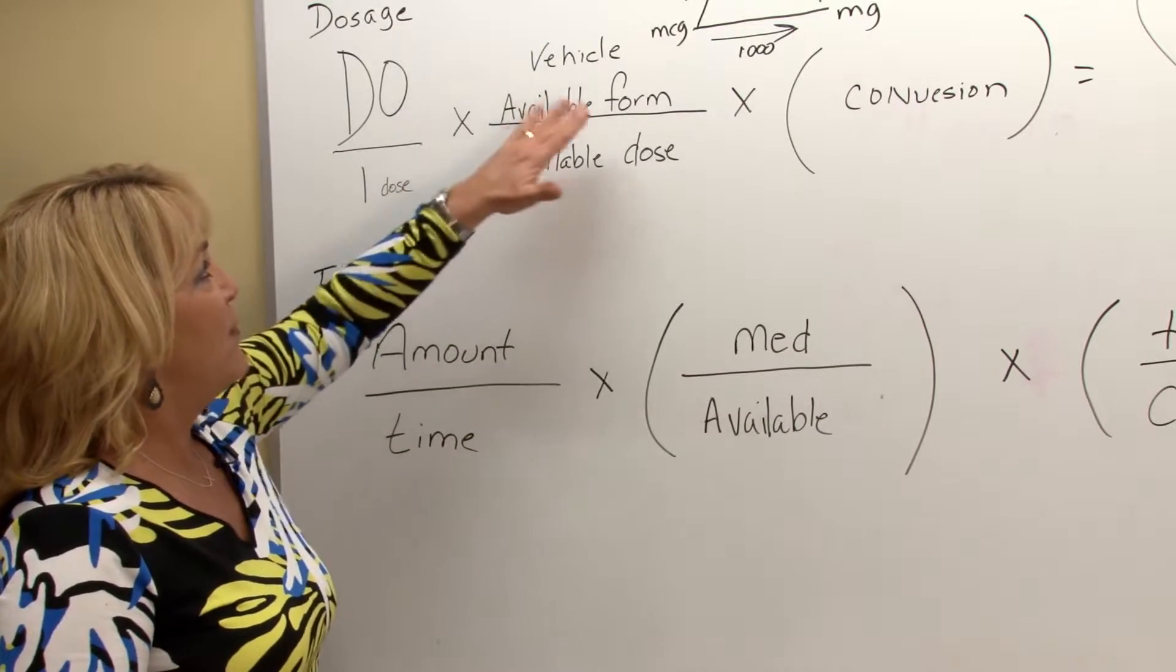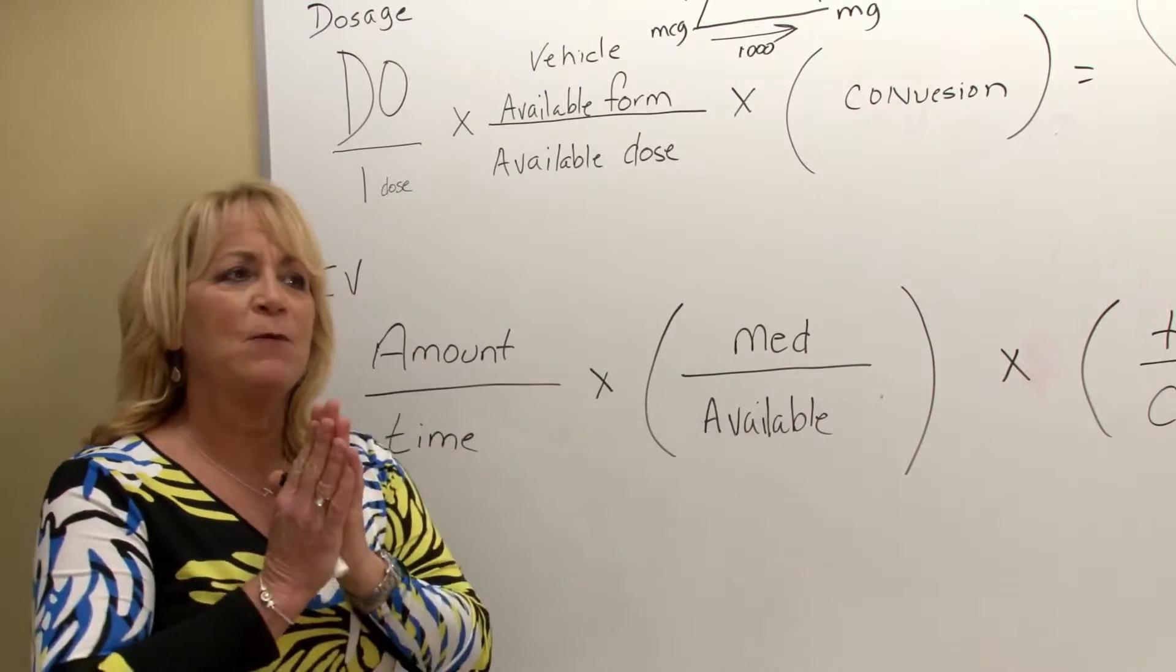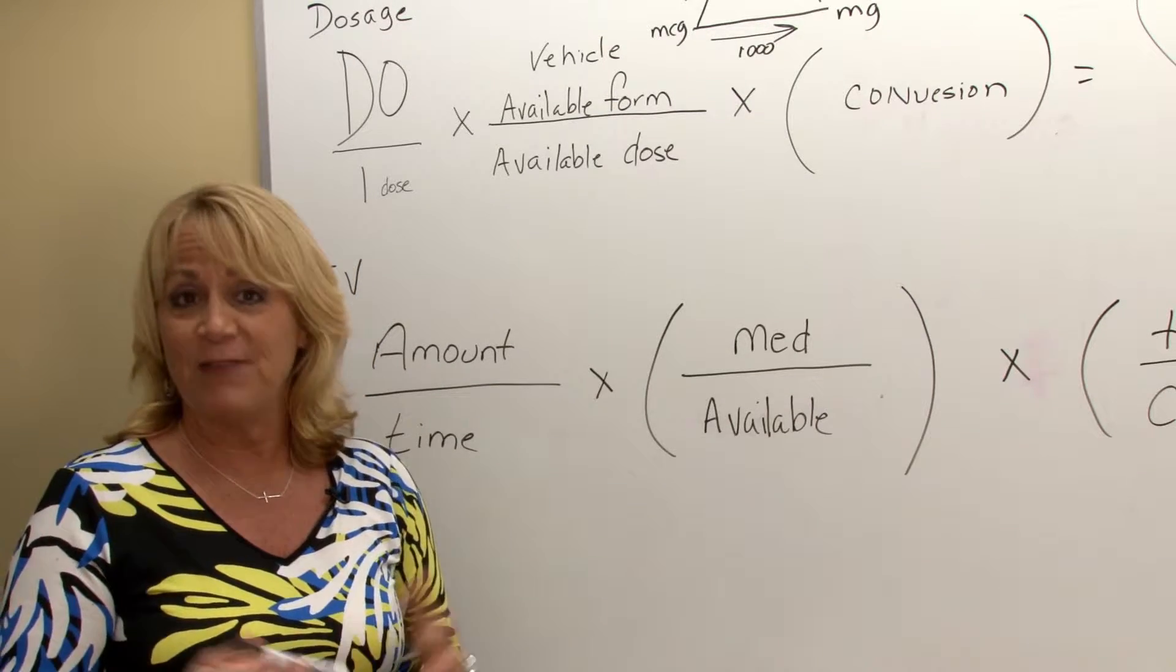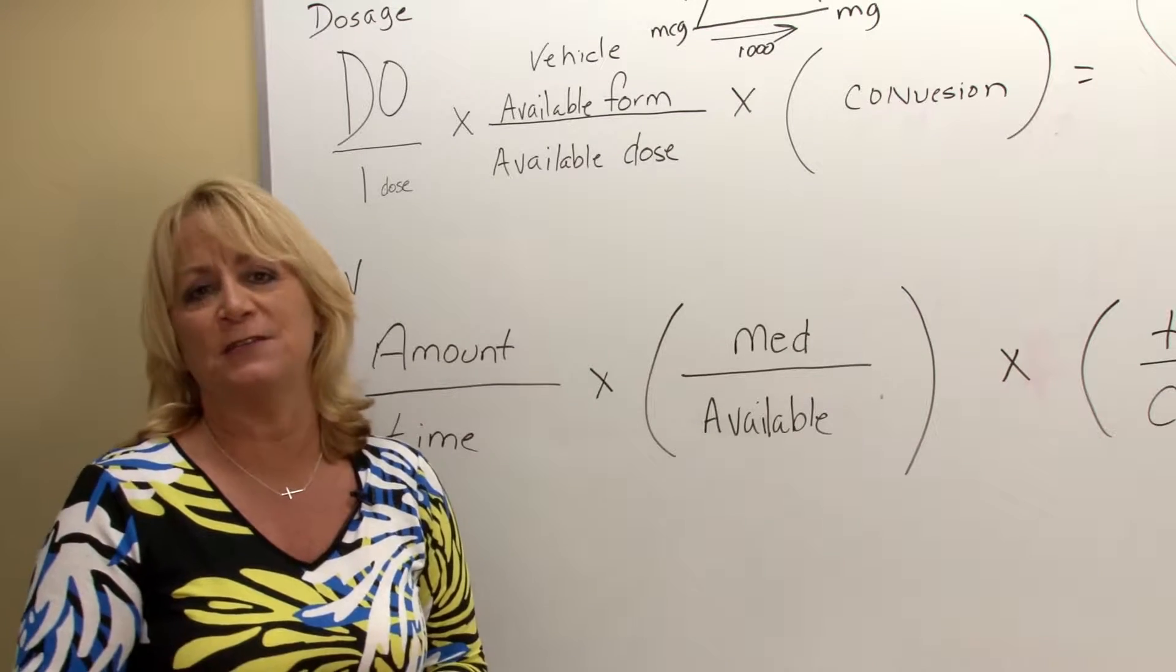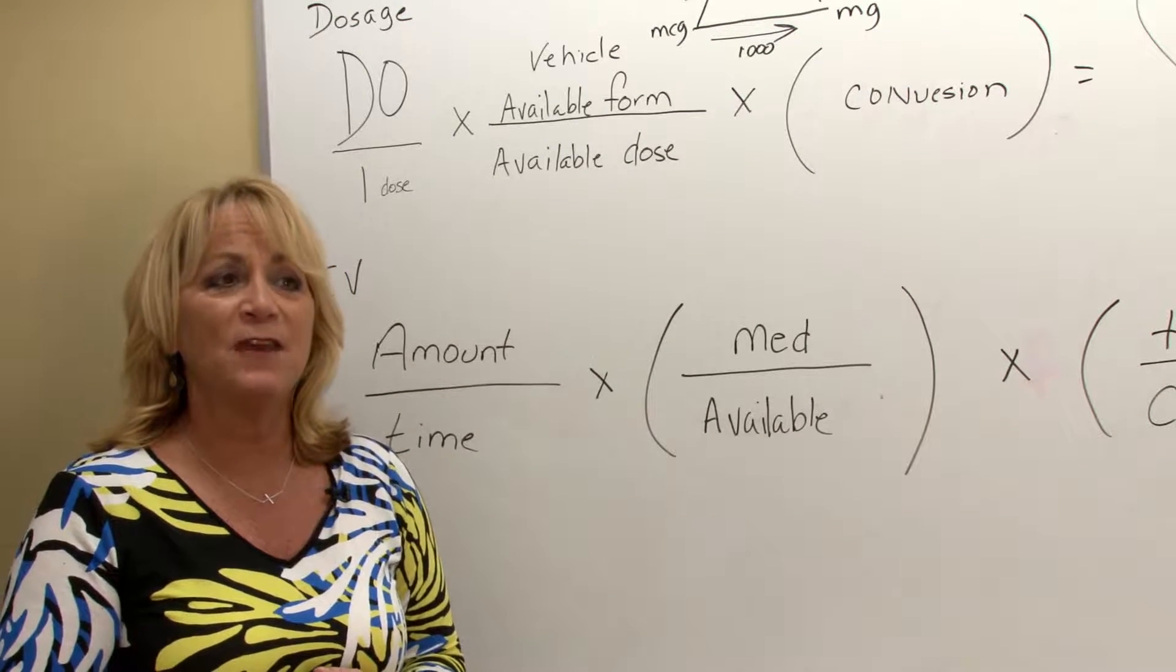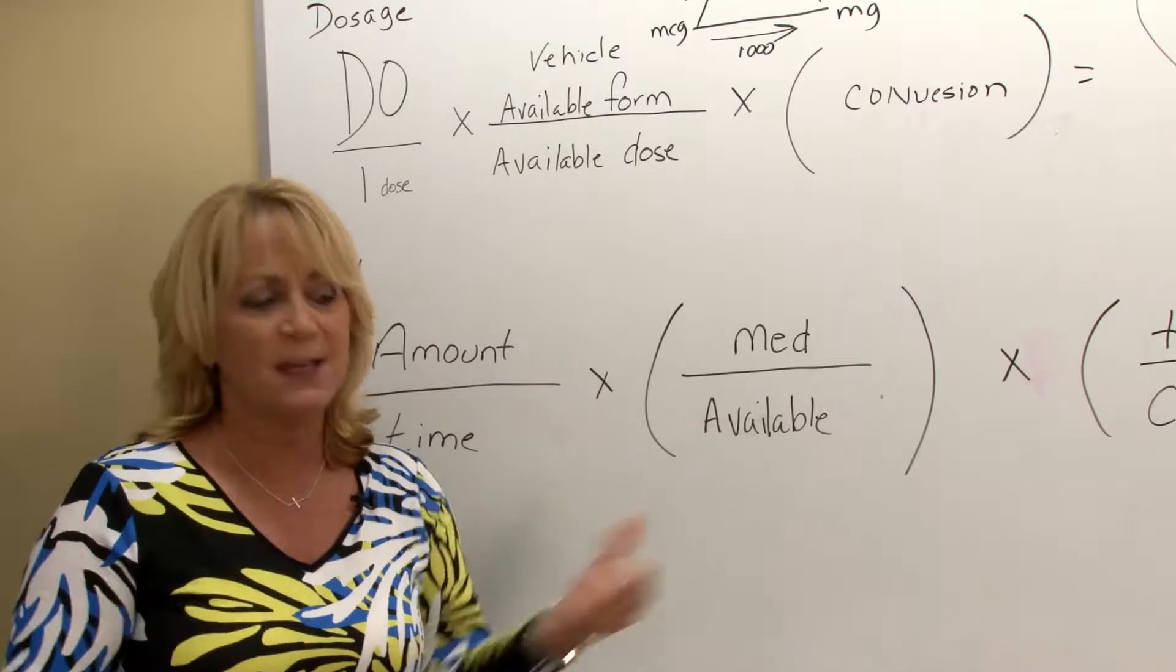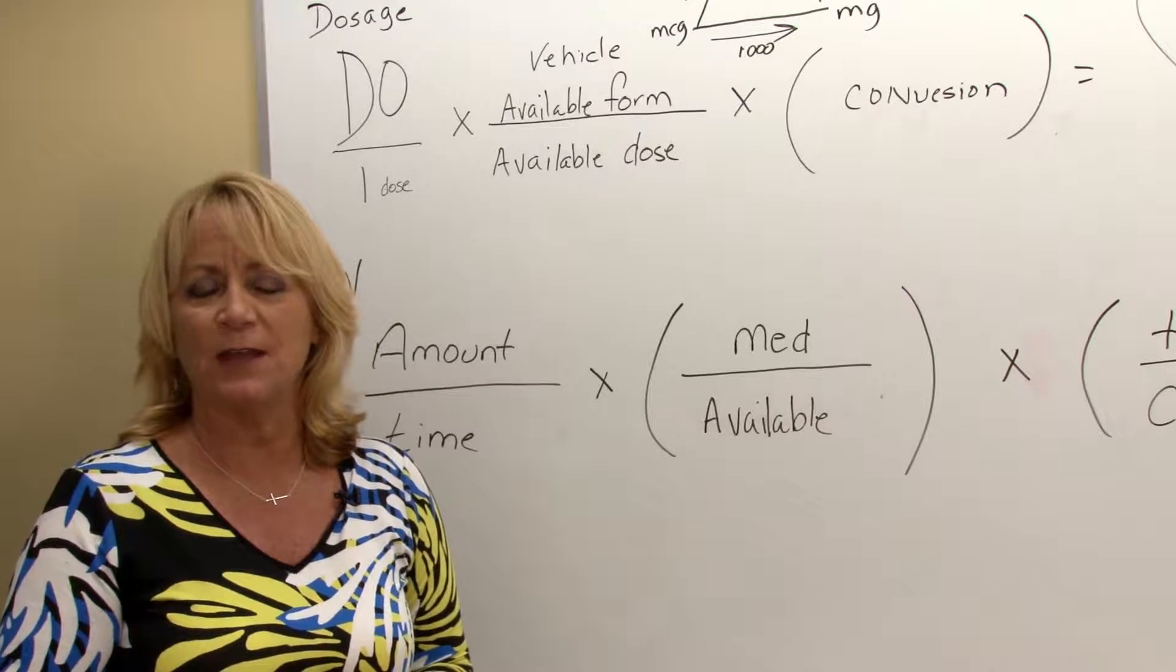When you're thinking about the vehicle here, let's look at this. Let's say we have to take six students to the Tampa airport. That is our order, we need to get six students to the Tampa airport. Well, what's the vehicle? If I have a van, then I can just use one van to get all those six students to the airport.